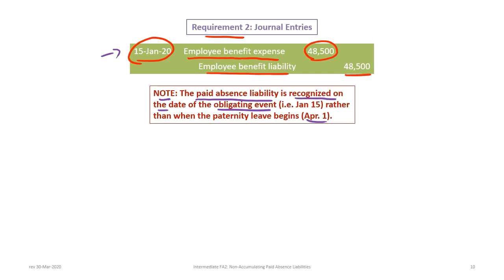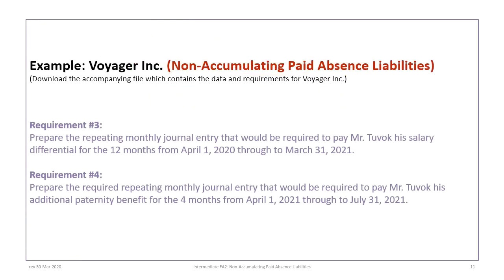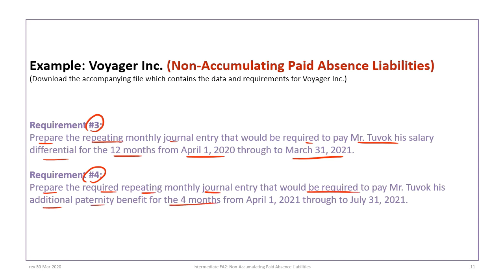Now we will complete requirements three and four, which cover the technical journal entries required during the period when Mr. Tuvok is on leave. For requirement three, we show the repeating monthly journal entry to pay Mr. Tuvok his salary differential for the 12 months from April 1st, 2020 through March 31st, 2021 — the green shaded area in the timeline. Requirement four covers the repeating monthly entries to pay his additional paternity benefit for the four months from April 1st to July 31st, 2021, shown in the light blue shaded area.